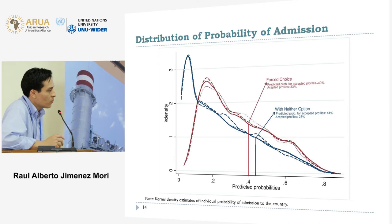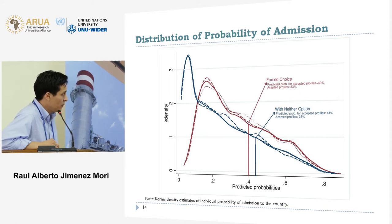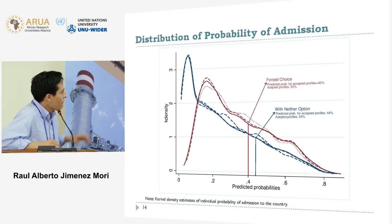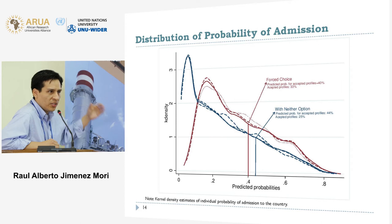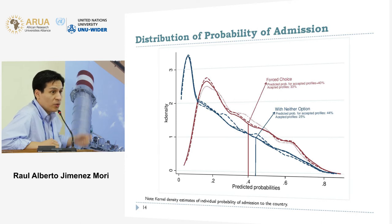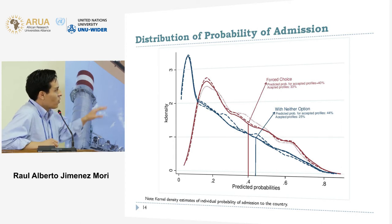Just to show a robustness check: these are the kernel densities of the probability of admission for the two types of choice experiments. Of course, the one with the neither option is more concentrated to the left, indicating a lower probability of support. The other lines show different specifications — regardless of which random parameter is used, which determinant is used as an explanatory variable, different distributional assumptions, or different error term specifications — they all tell more or less the same story.